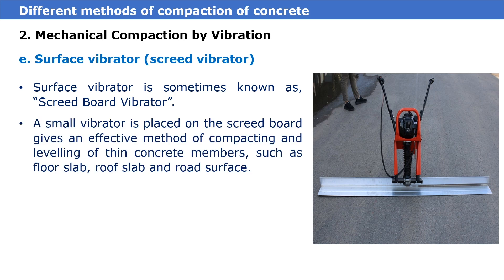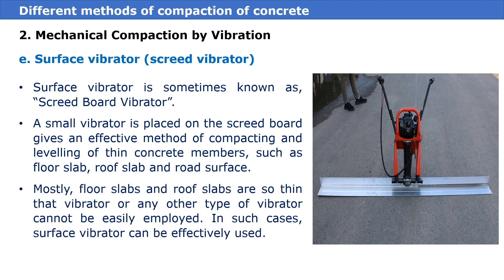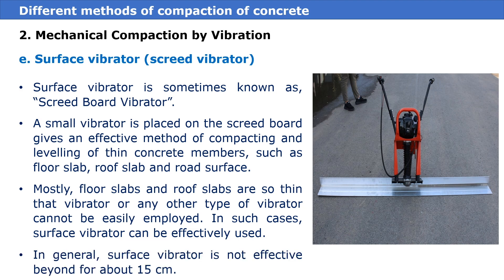Fifth is the surface vibrator, sometimes known as the screed board vibrator. A small vibrator placed on the screed board gives an effective method of compacting and leveling thin concrete members such as floor slabs, roof slabs, and road surfaces. Since floor and roof slabs are often so thin that an internal vibrator cannot be easily employed, surface vibrators can be effectively used. In general, a surface vibrator is not effective beyond about 15 cm depth.